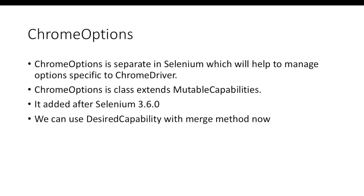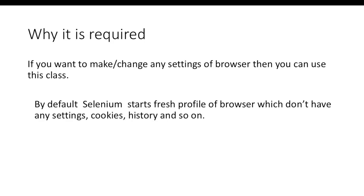Internally, ChromeDriver will extend another class called MutableCapabilities, which I will show you in a few minutes. It got added after version 3.6.0, so if you are using a previous version of Selenium you might not find this class. In version 3.12.0 you can use ChromeOptions, and you can also use DesiredCapabilities with the merge method. Previously this merge method was not available, and the DesiredCapabilities class is now deprecated in the latest version, but you can still use it with the merge method.